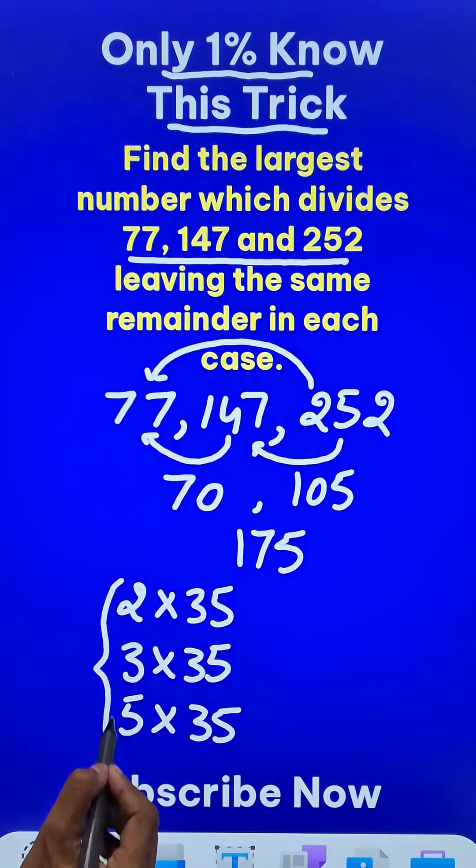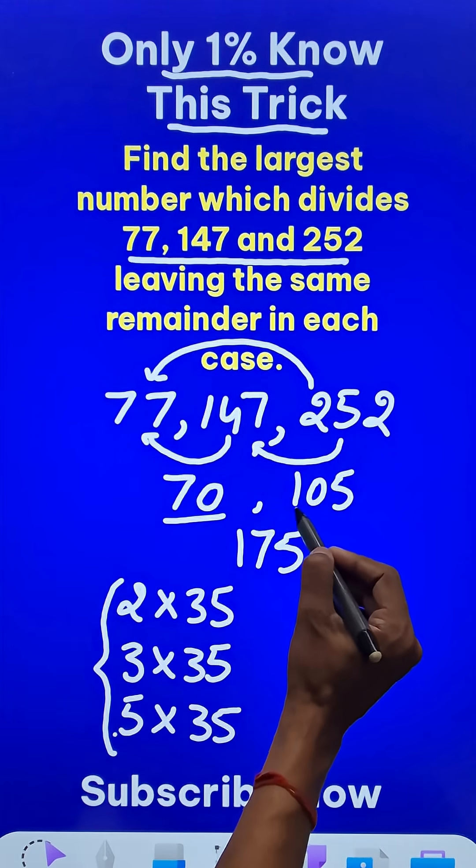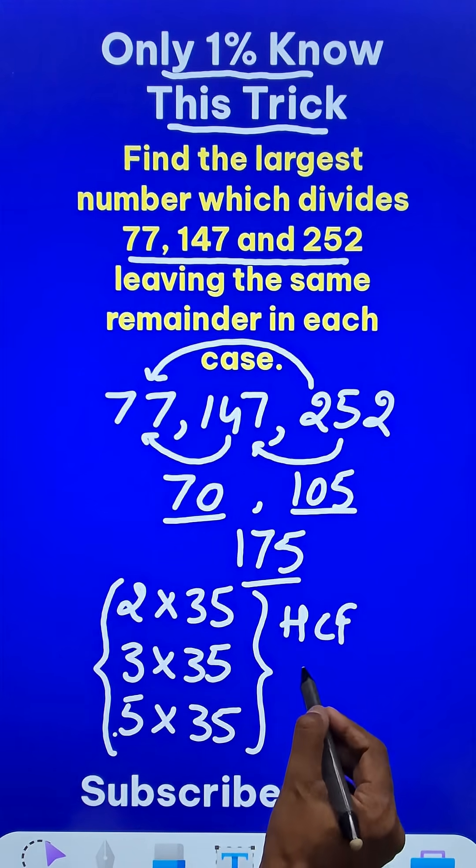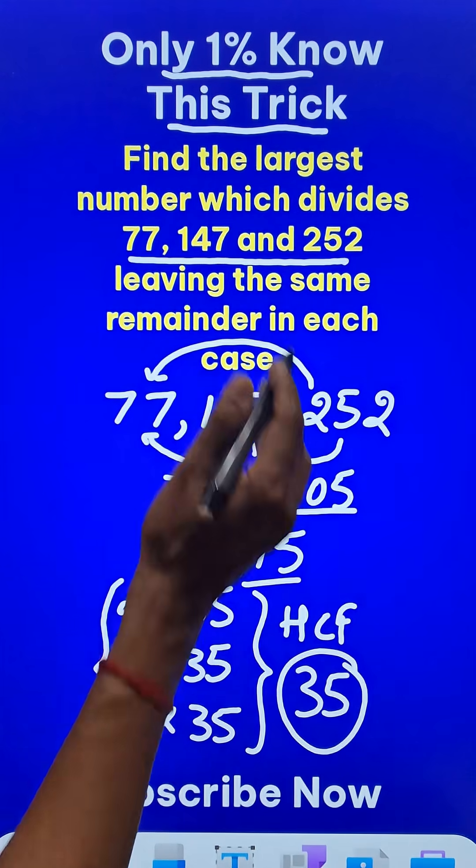Now between these numbers 2, 3, and 5 there is no other common factor and therefore the highest common factor of these happens to be the number 35 and this number 35 is our answer for this problem.